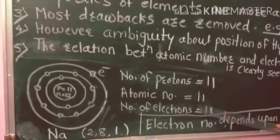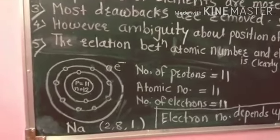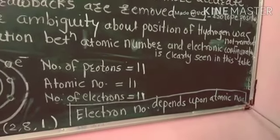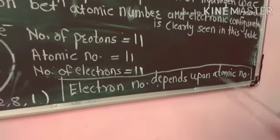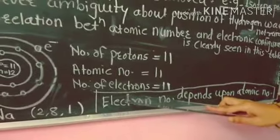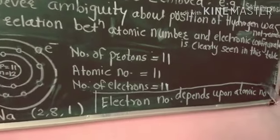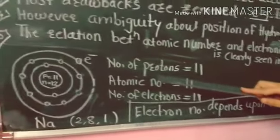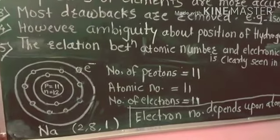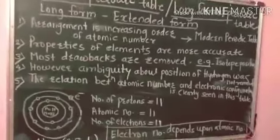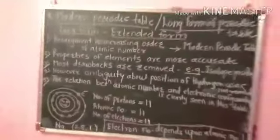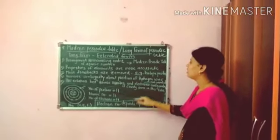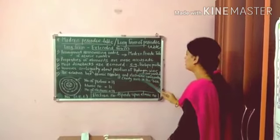The number of protons equals the number of electrons. So the electron number depends upon the atomic number — not the other way around. The atomic number does not depend upon electrons; rather, the electron number depends upon the atomic number, which is calculated from the number of protons.